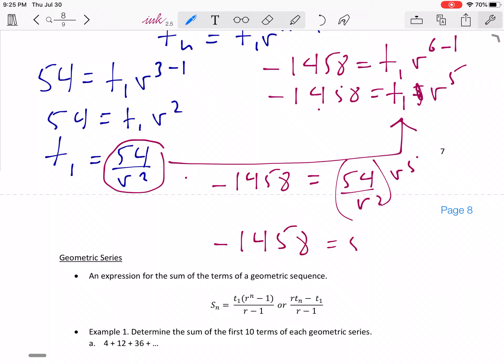So let's solve for R. So R cubed is going to equal negative 1458 over 54. So what you do is you divide that and then you take the cube root of both of these and what you're going to get is R is equal to negative 3. So R is equal to negative 3.